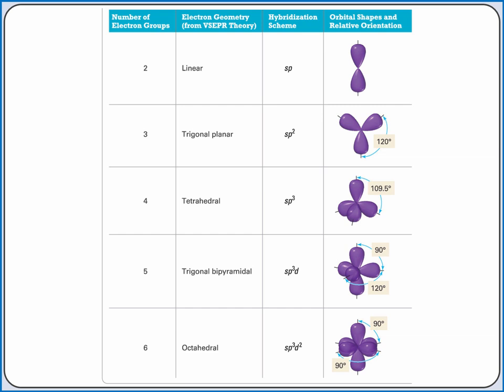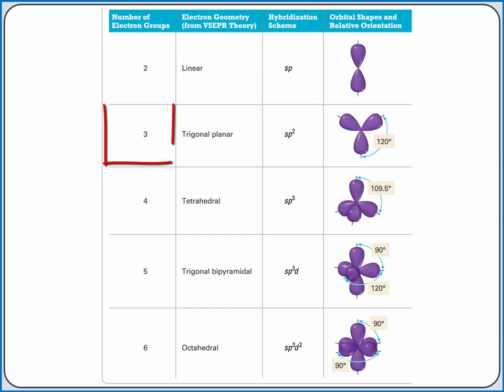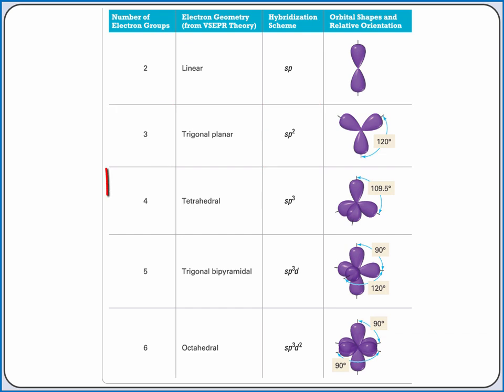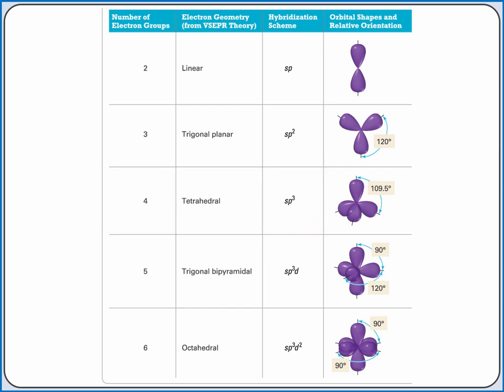To determine the type of hybridization we need for an interior atom, we'll draw the Lewis structure and count the number of electron groups on the atom in question. The number of electron groups will match the number of standard atomic orbitals we need to add together to create hybrid orbitals. If there are two electron groups, we add together one s orbital and one p orbital to create two sp hybrid orbitals. If there are three electron groups, we add together one s orbital and two p orbitals to create three sp2 hybrid orbitals. If there are four electron groups, we add together one s orbital and three p orbitals to create four sp3 hybrid orbitals, and so on.